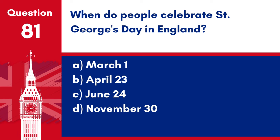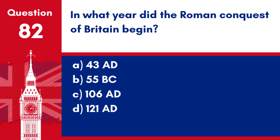Question 81. When do people celebrate St. George's Day in England? a. March 1. b. April 23. c. June 24. d. November 30. Answer: b. April 23. St. George's Day is celebrated on April 23 in England, honouring St. George, the Patron Saint of England.